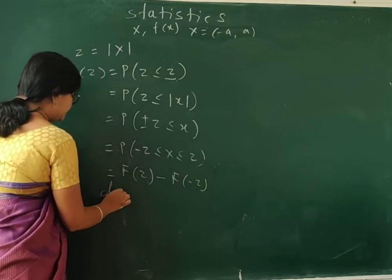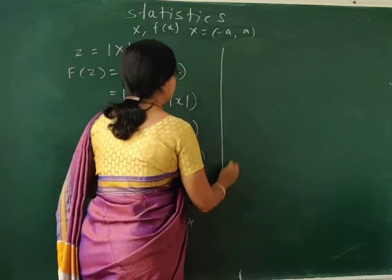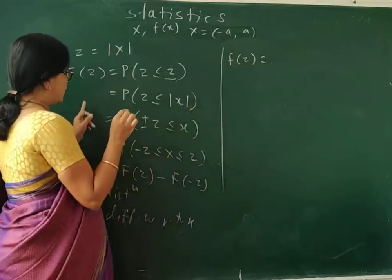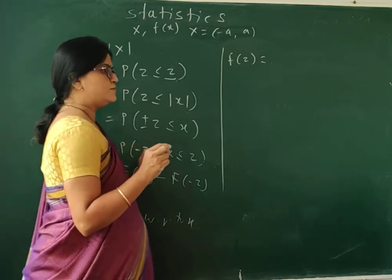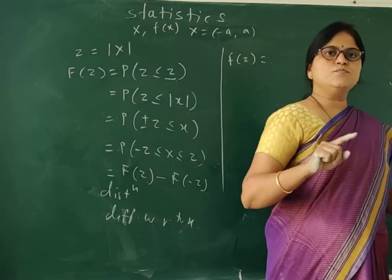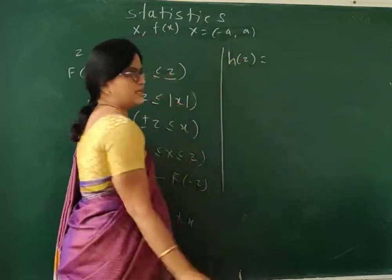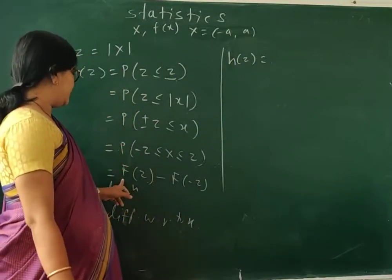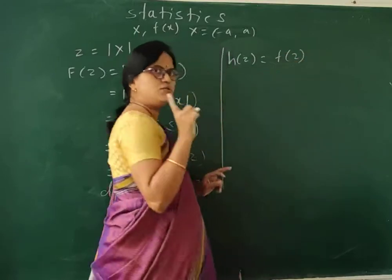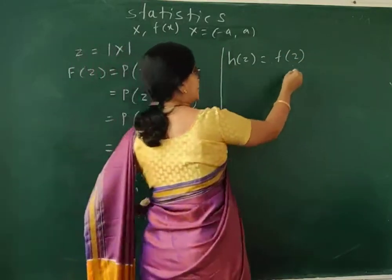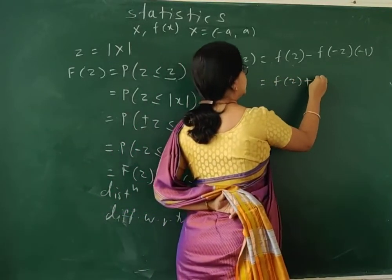To find the PDF of Z, we differentiate F_Z(z) = F(z) − F(−z) with respect to z. Differentiating, we get f_Z(z) = f(z) + f(−z). If the distribution is symmetric, then f(z) = f(−z), so f_Z(z) = 2·f(z), for z greater than 0.